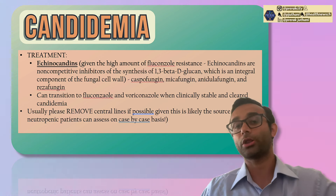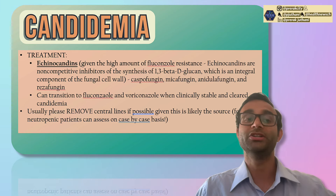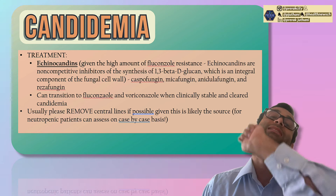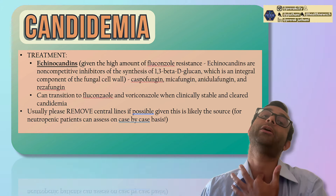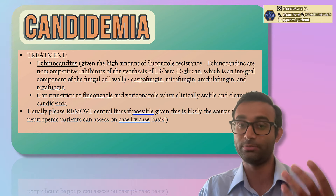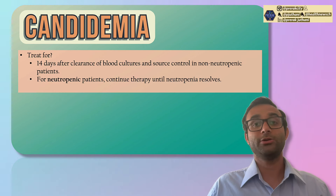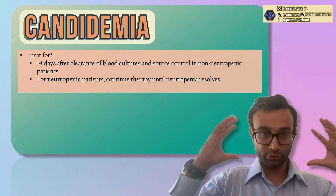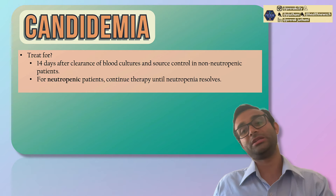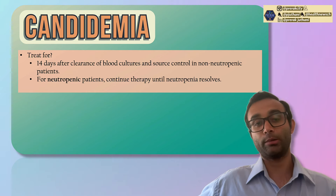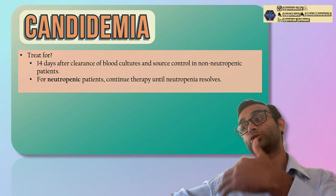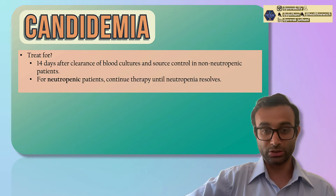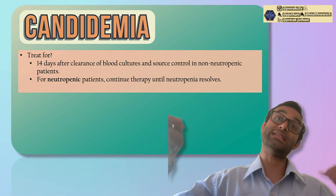Obviously, establish other access if needed — if a patient is very sick and needs pressors, you'll need a new central line. But remove one that's been in for a long time if you think it's the source, especially if it's red or painful around the site. For treatment duration, treat for 14 days after clearance of blood cultures. Repeat blood cultures within 48 to 72 hours after starting appropriate antifungal therapy, and once cultures clear, count 14 days from that first clearance — that's deemed source control.